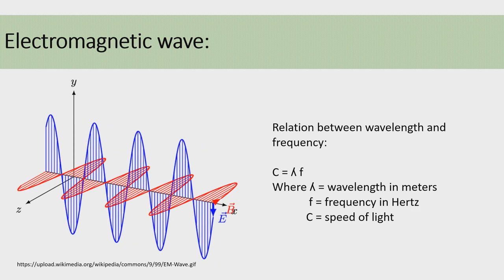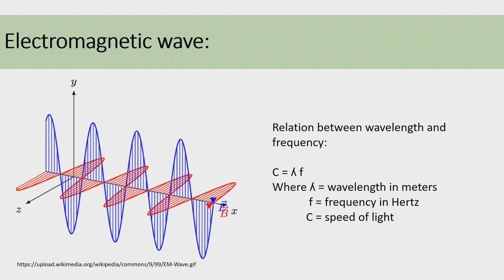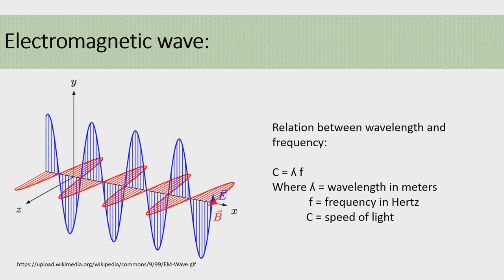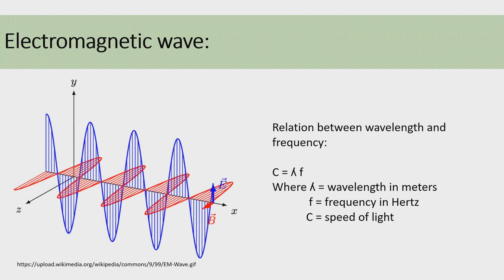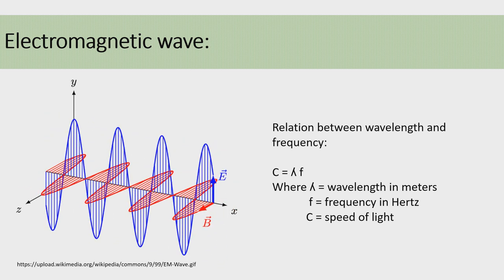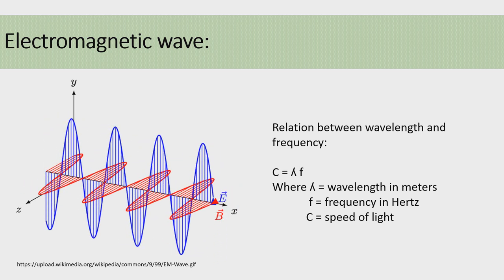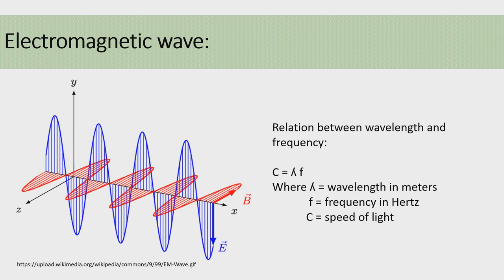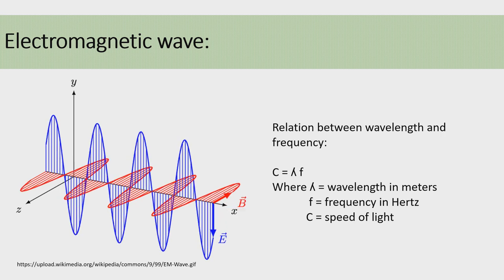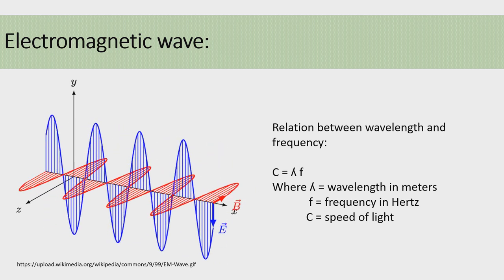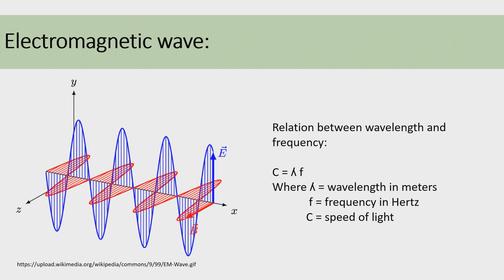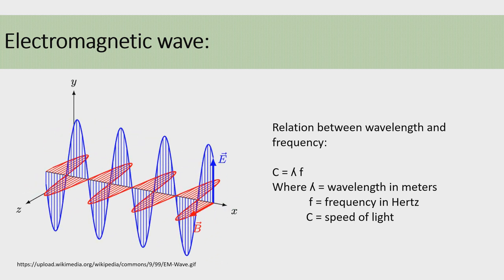In wireless communication, with the help of an antenna, the electric signal is converted into an electromagnetic wave and then transmitted using a transmitter into space. It travels into space with the speed of light. The electromagnetic signals can travel through space for a long distance, and this is the main advantage of electromagnetic waves.